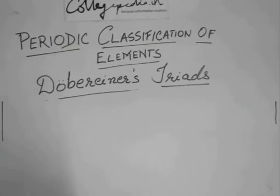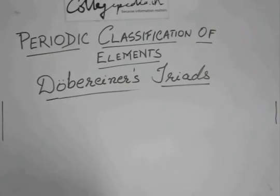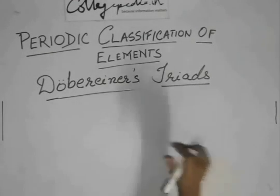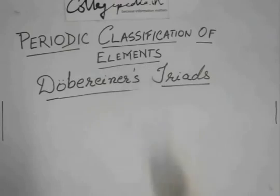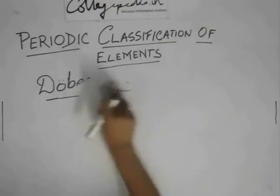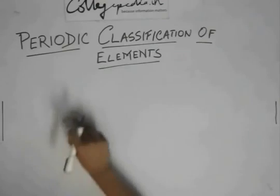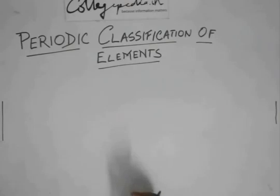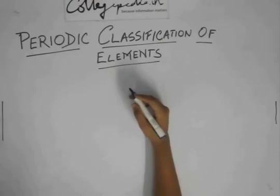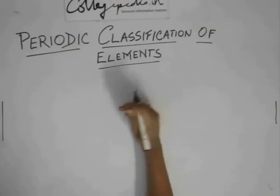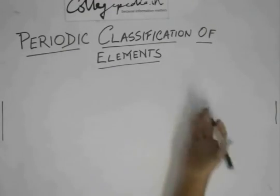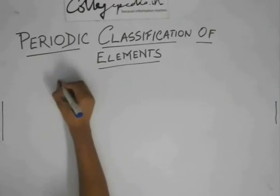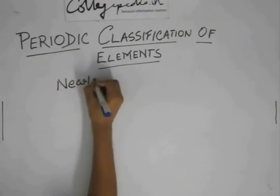When you can answer it easily, don't go for complicated answers. This is all about Dobereiner's Triads — they were not of much use. The next person who gave his own theory of classification of elements, and who was definitely better than Dobereiner because he classified more than just nine elements, was Newlands.